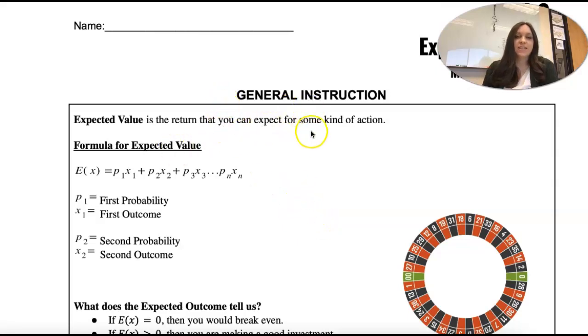Alright, our last section is on expected value. That's a return that you can expect for some kind of action. And we see it a lot in insurance, lotteries, and gambling.